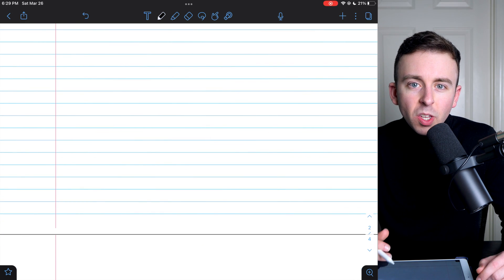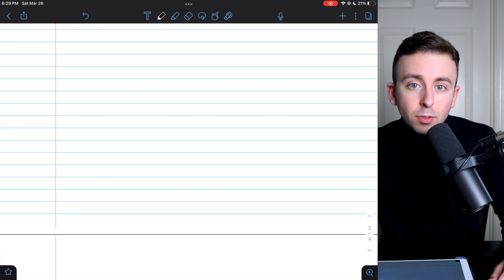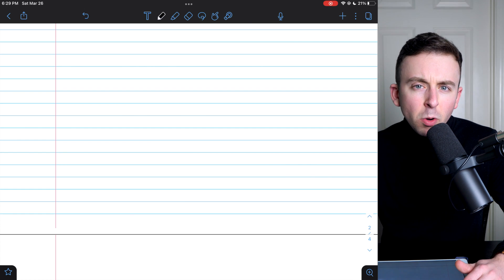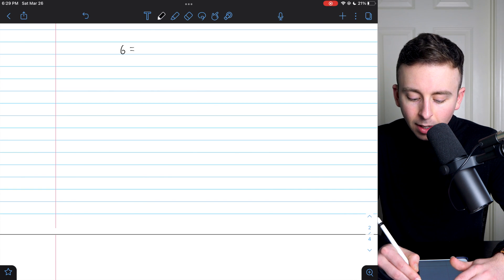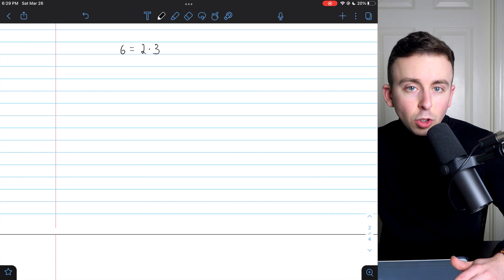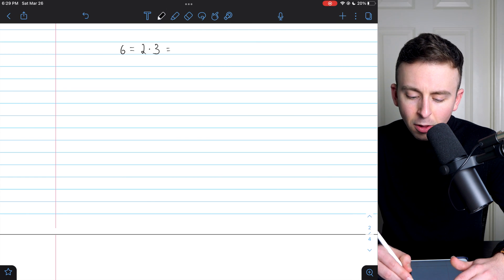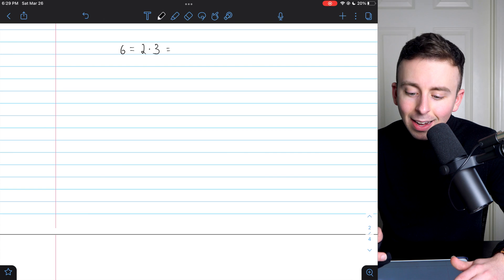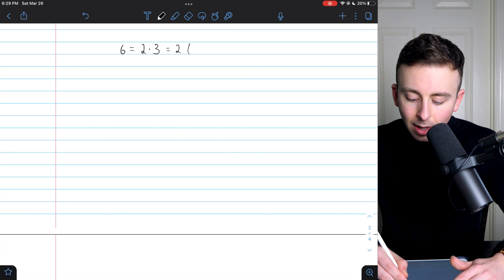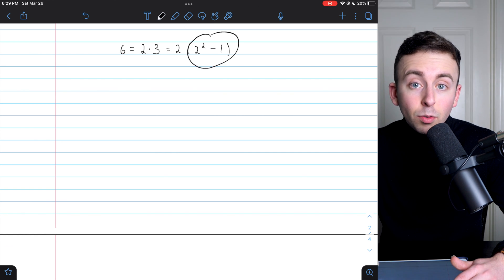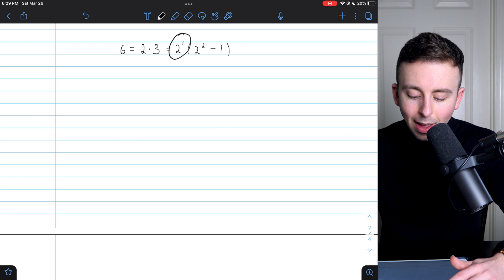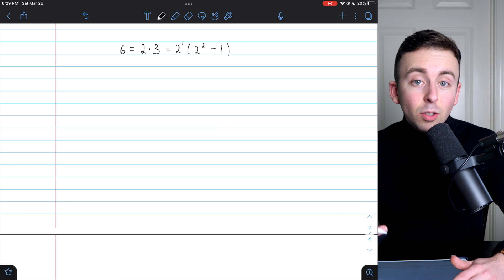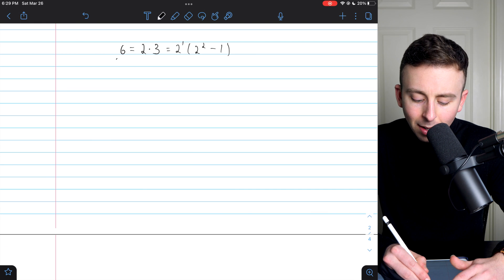Now, the last thing I want to show you will lead into some future lessons where we'll prove our first results regarding perfect numbers. I want to show you a certain way we can write these perfect numbers. Let's start with 6. Notice that 6 is equal to 2 times 3. And another way we could write 3 closely related to a power of 2 is like this. 2 times 2 squared minus 1, because 2 squared minus 1 is 4 minus 1, which is 3. And maybe just for kicks, I'll put the power of 2 over there as well. So 2 to the power of 1 times 2 to the 2 minus 1.